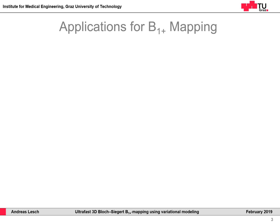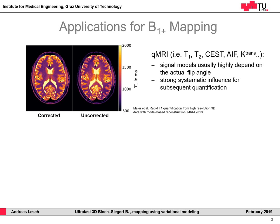As a motivation, I would like to show you some applications for B1 mapping. One of the most important applications would be the correction for quantitative MRI methods like T1 mapping, T2 mapping, CEST, or many others. Many signal models used for that purpose can highly depend on the actual flip angle, and this can lead to a strong systematic error in the subsequent quantification procedure.